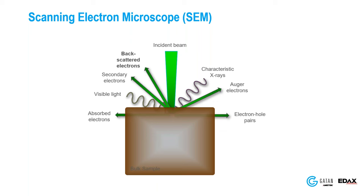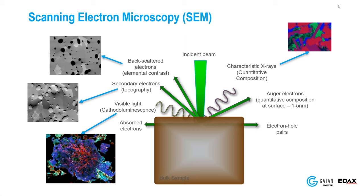In a scanning electron microscope, we have more of a bulk sample, so we don't expect any transmission through the sample. You have an incident beam, and you get backscattered electrons, secondary electrons, characteristic X-rays, Auger electrons which are very surface sensitive, visible light, and cathodoluminescence. If we put detectors into the microscope, we can see all these various images.